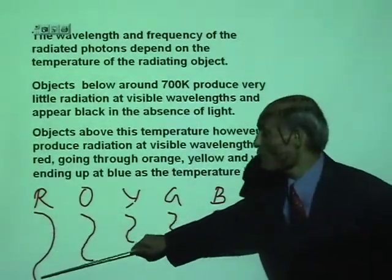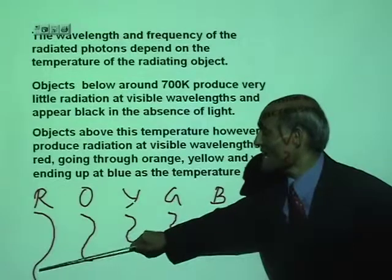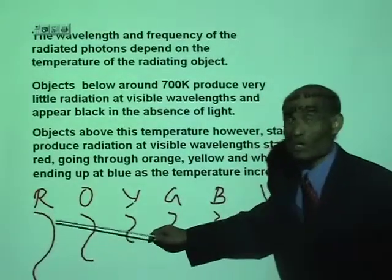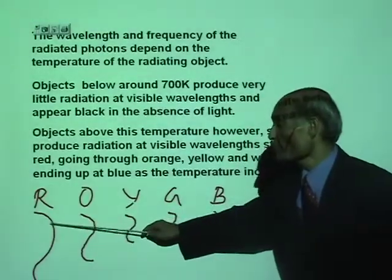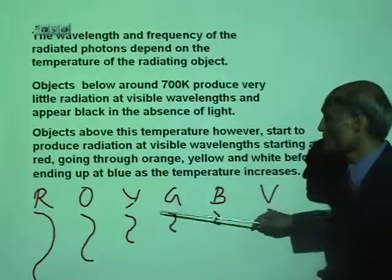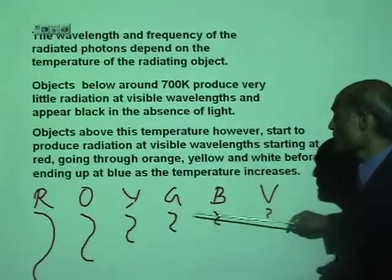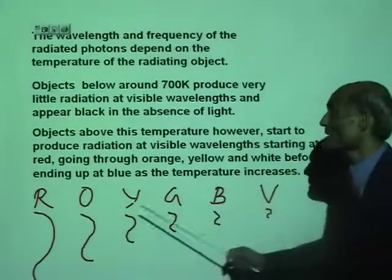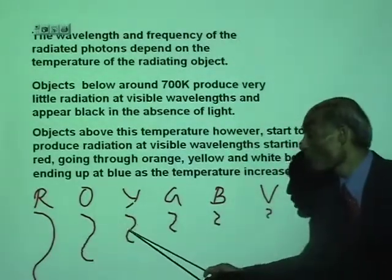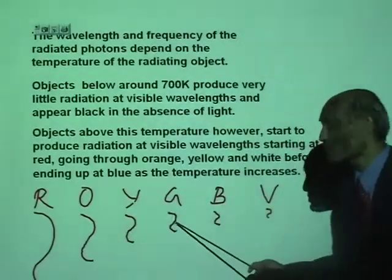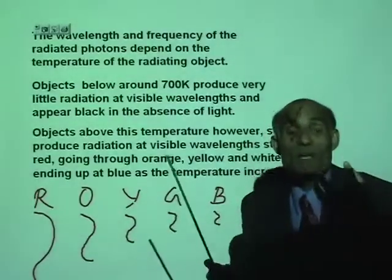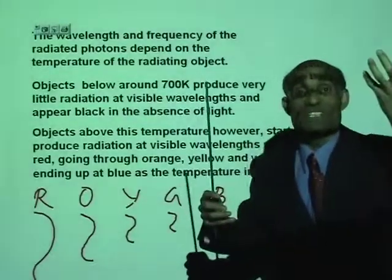When you draw a wave, a wave has a crest and a trough. And look at that — as you move from red to orange to yellow to green, blue, violet, the wavelength is becoming shorter and shorter and shorter. It means the waves are becoming more and more energetic.